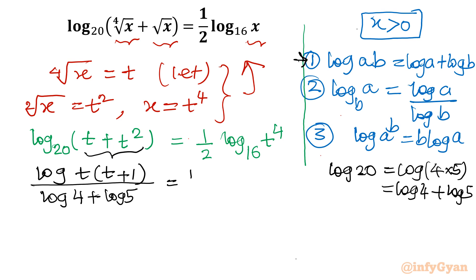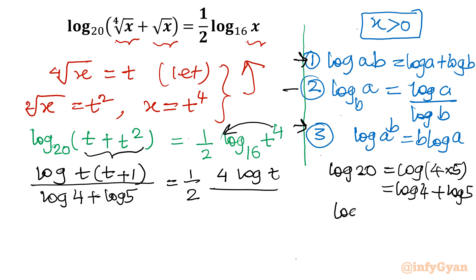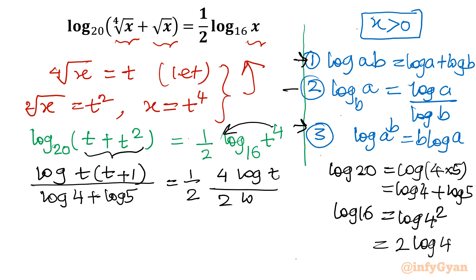On the right-hand side, using property 3, log(t⁴) = 4 log t. So we get (1/2) × (4 log t) over log 16. Now log 16 = log(4²) = 2 log 4. After simplification, the 2's cancel giving 2 log t over log 4 on the right-hand side. We can cancel this further.